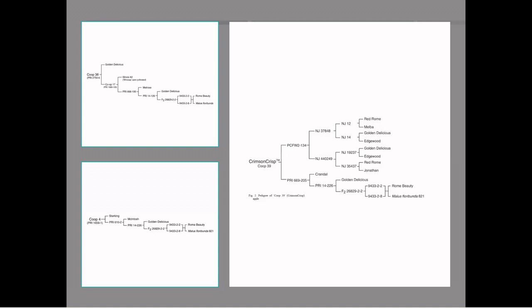Goldrush was the 10th apple cultivar developed in the PRI program. Priscilla was the second apple cultivar developed in the PRI program. Priscilla was introduced in 1962 and Goldrush was introduced in 1973.